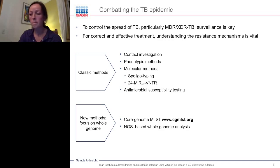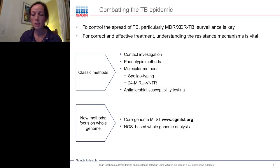More recent methods include core genome MLST, where almost 3,000 loci in the genome are analyzed, and genome-wide comparisons of variant positions. The advantage of genome comparisons is that SNPs are distributed throughout the genome, with a very low reverse mutation rate. Whole genome sequence analysis provides by far the greatest resolution in outbreak investigations and may precisely distinguish single isolates, which is especially useful in very complex outbreak situations.